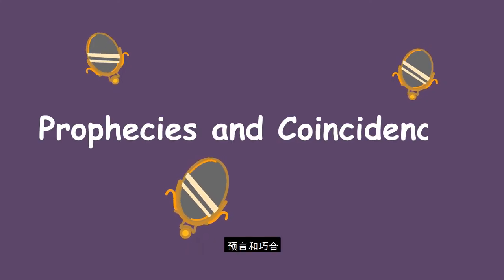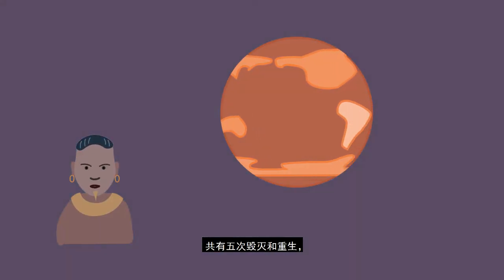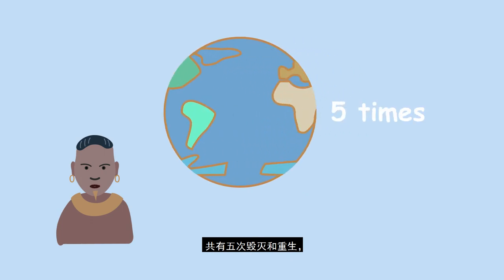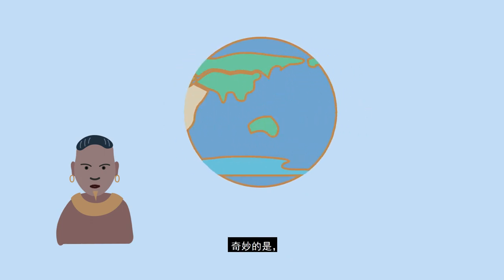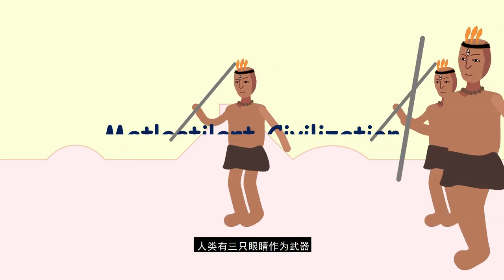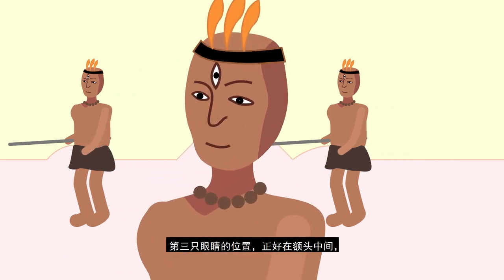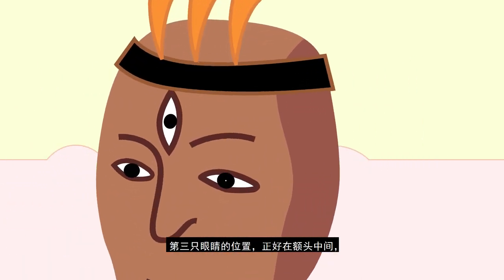Prophecies and coincidences. The Mayan prophecy says that our world has been destroyed and reborn five times in total. Amazingly, there are similar records in the Classic of Mountains and Seas. According to the Mayan prophecy, in the Matlactalart civilization, men had three eyes as weapons to fight off invaders. The third eye is right in the middle of the forehead, and different people have different colors of eyes, including yellow, green, purple, grey, and brown.